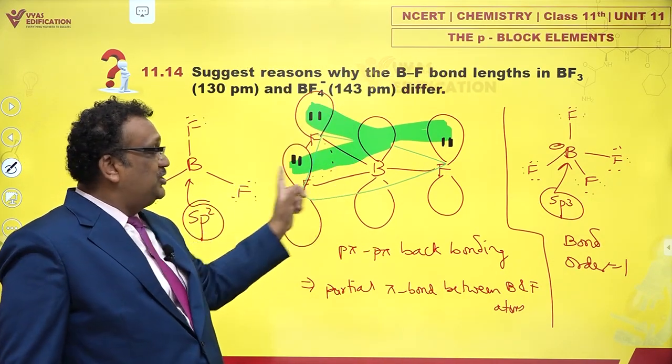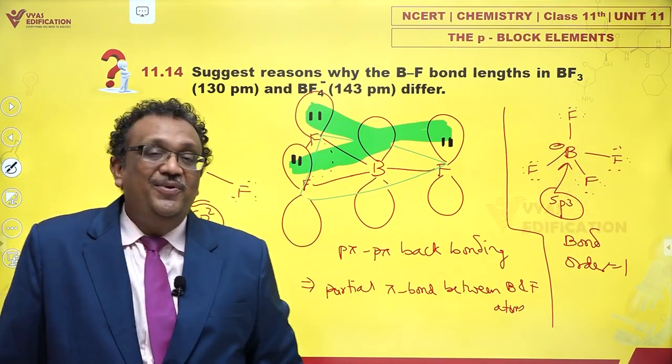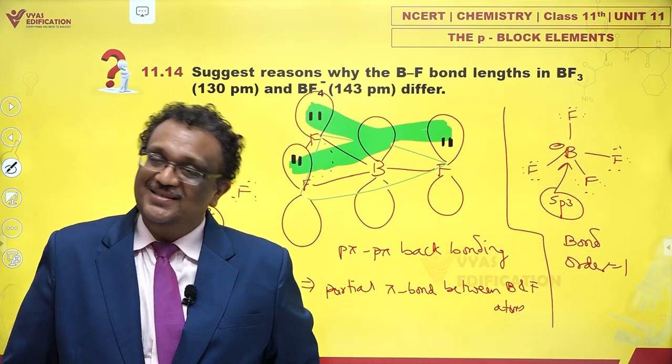But when there is a partial pi bond, the bond length decreases from 143 to 130 picometer in BF₃. That, my dears, is the reason.